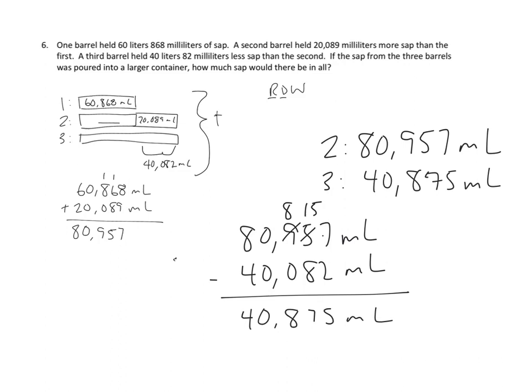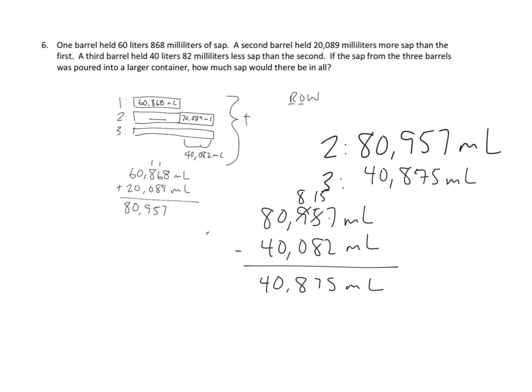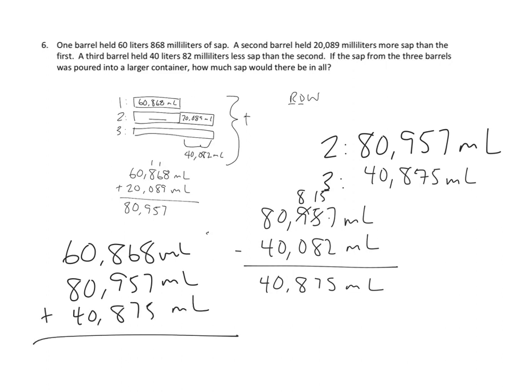And then we need to add all three of those together. So, over here in the left-hand corner, I'm going to add all three of those. That's 60,868 milliliters plus 80,957 milliliters plus 40,875 milliliters. We are adding those all together. Let's go. Eight plus seven plus five is 20. So that's zero and two tens. Two plus six plus five plus seven is 20 again. That's zero. Two becomes a hundred. Two plus eight plus nine plus eight is 27. So that's seven with a two in the thousands place. Two plus zero plus zero plus zero is two. And six plus eight plus four is 18. That's 182,700.